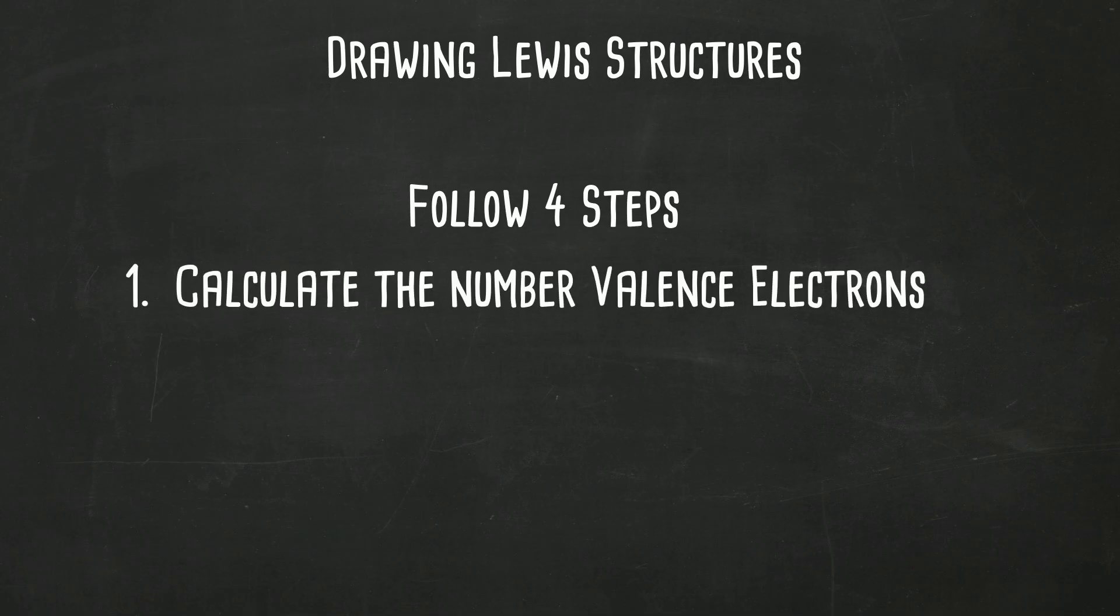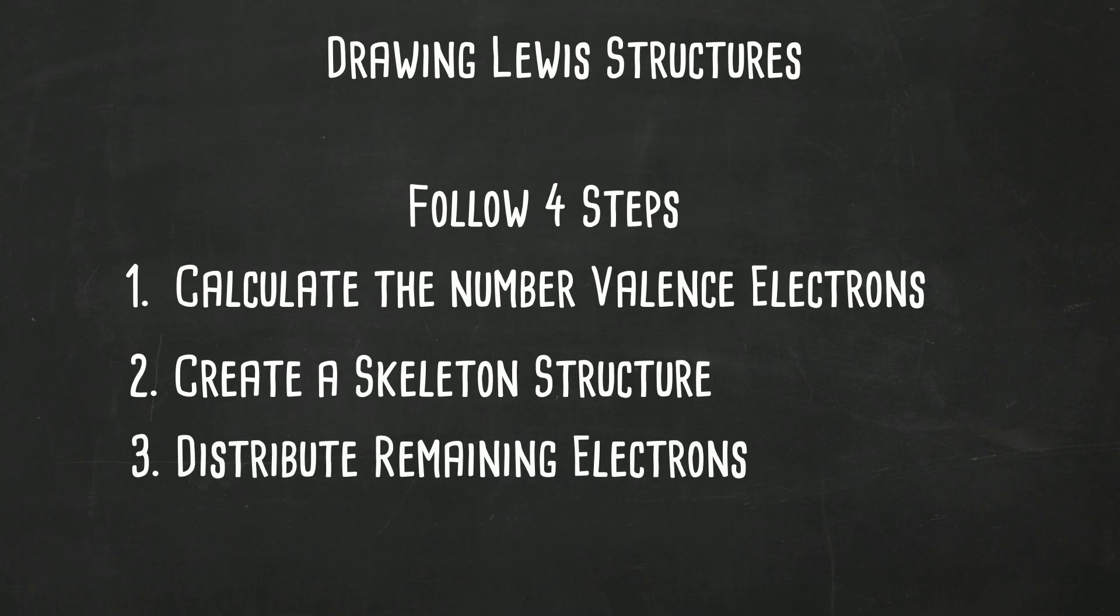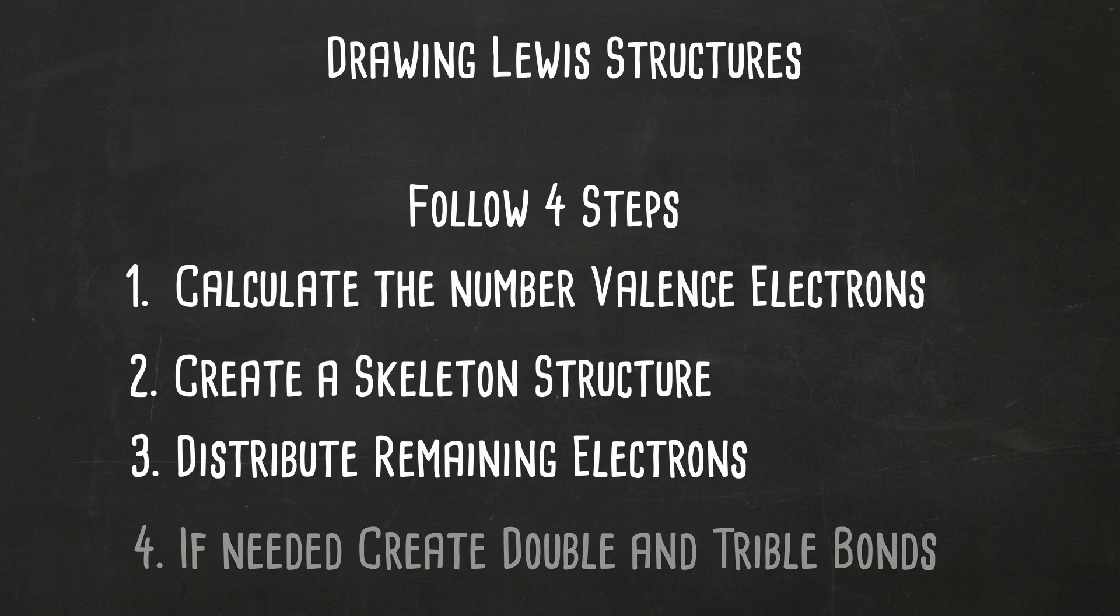One, we're going to calculate the number of valence electrons. Then we're going to draw a skeleton structure which will include some bonds. Then we're going to distribute any remaining electrons. And then last we're going to use double or triple bonds to satisfy the octet rule. So let me work an example and we'll work through these four steps.